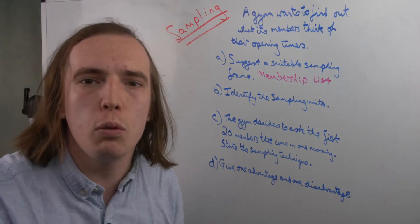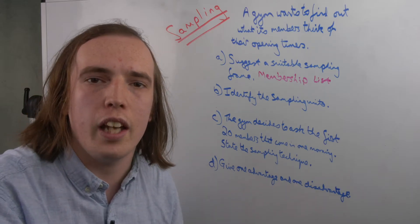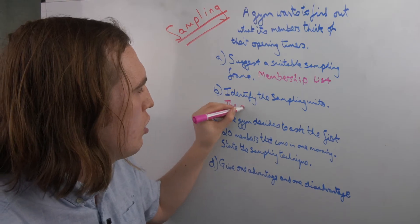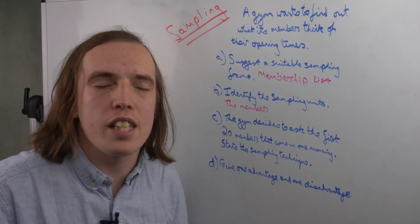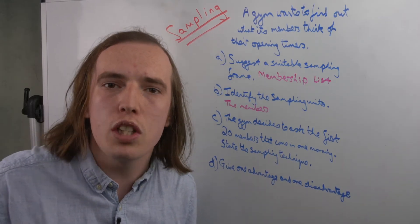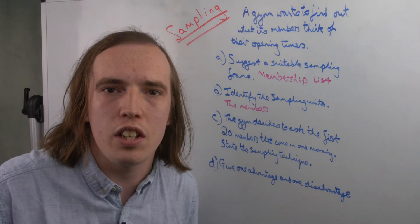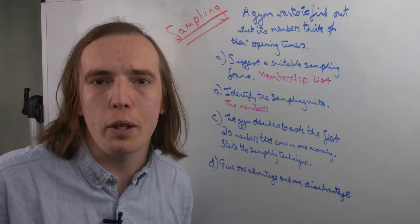And then, for B, identify the sampling units. This is similar. If you think, what is it that you're looking at? In this case, it would be the members. If you were instead, say, in a factory and looking at potentially defective units of something, that type of object would be your sampling unit instead. So it doesn't have to be who you're asking. It's just, what is it that we are studying? What are we getting data about?